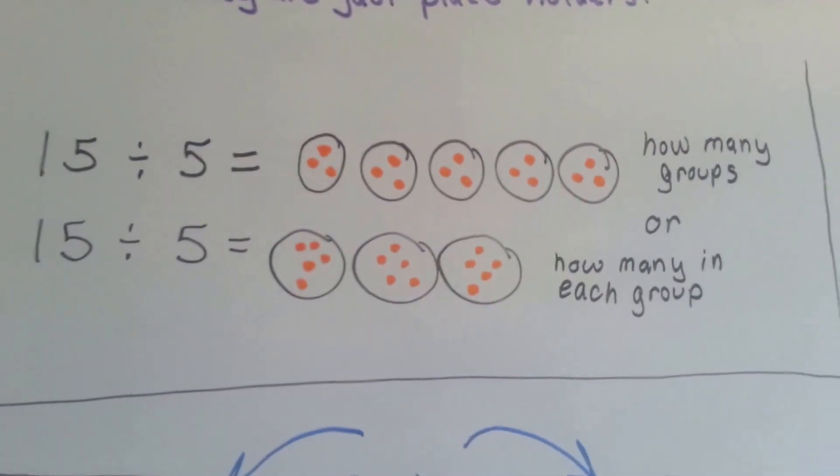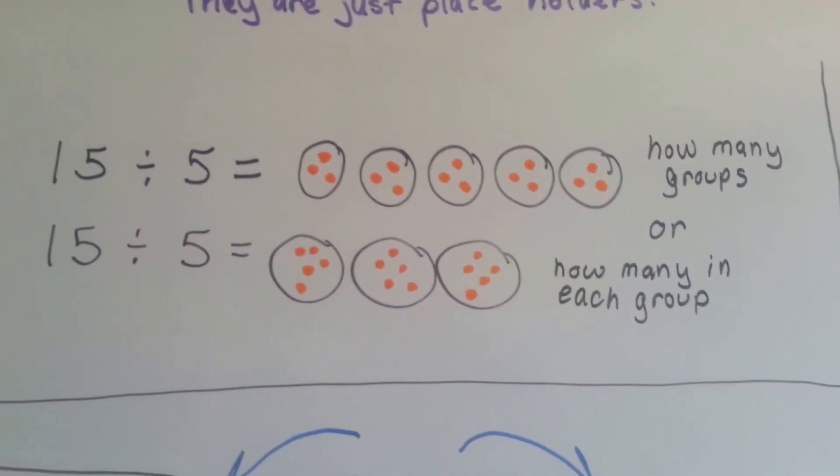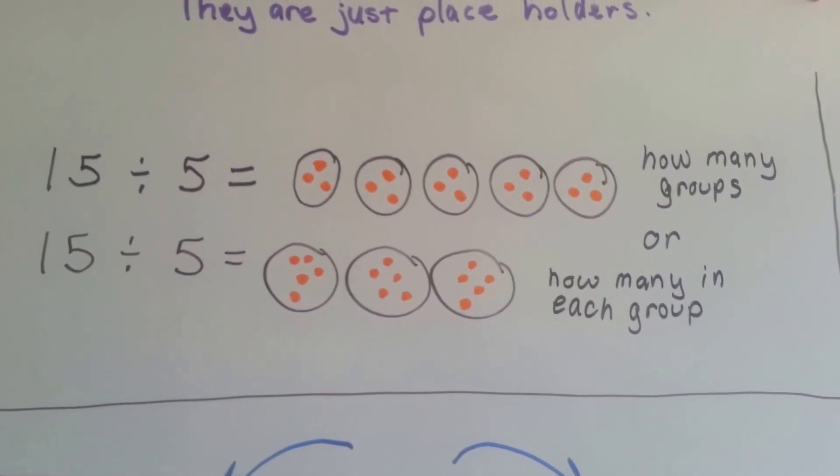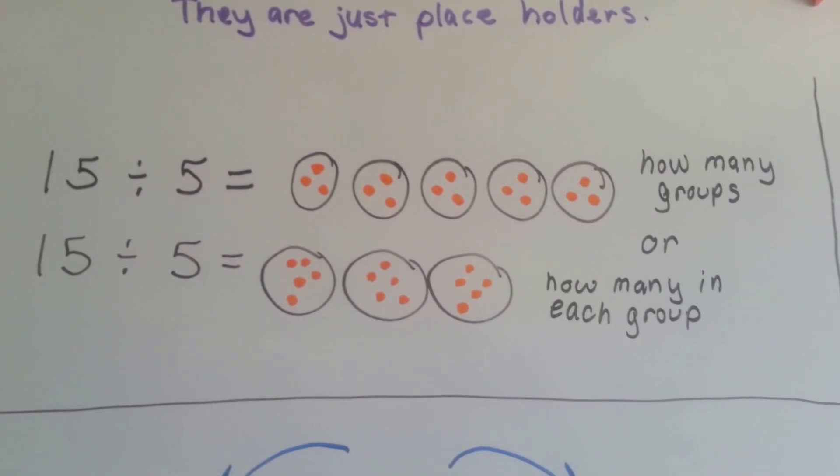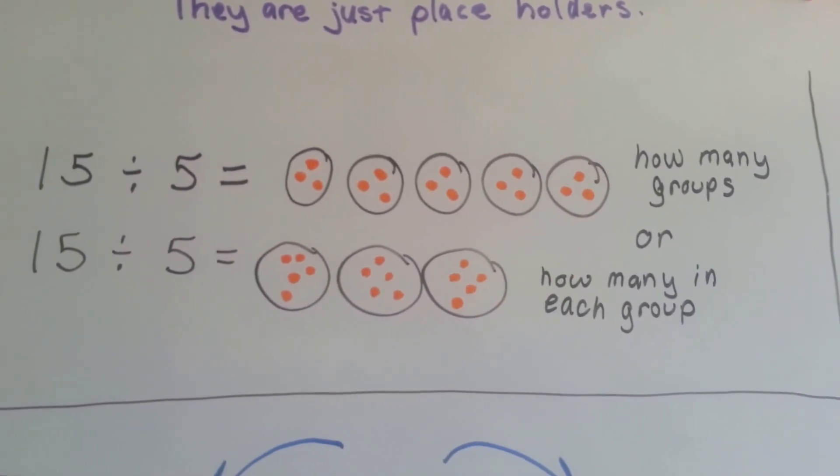Here we have two whole numbers. 15 divided by 5. Does it mean how many groups, that there's five groups so we put three in each group? Or does it mean that there's five in each group, so we end up with three groups?